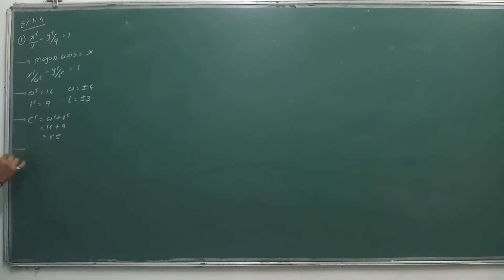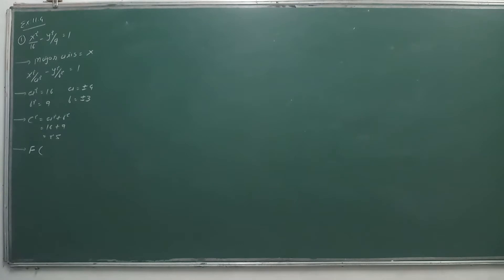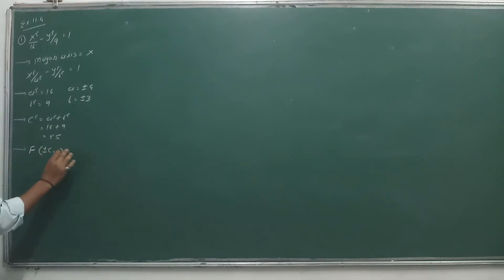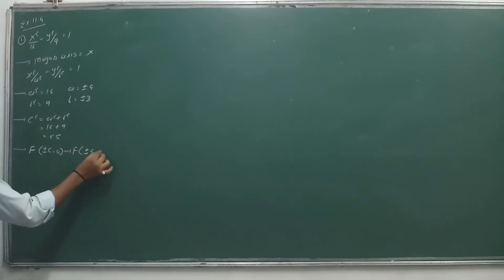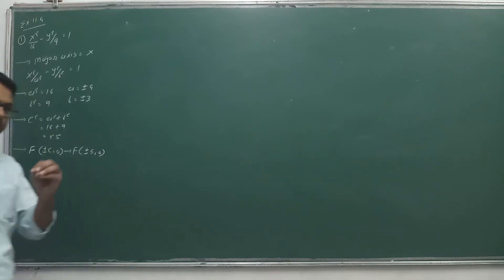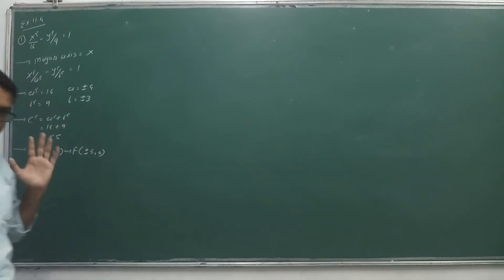First, find the foci F. According to major axis X, we write (±c, 0). So the answer is F = (±5, 0), since c² = 25 means c = 5.